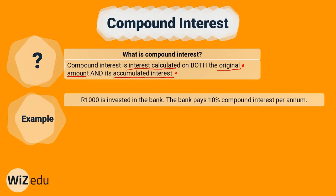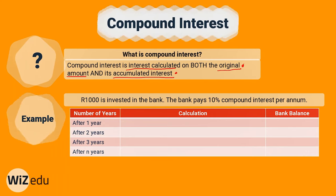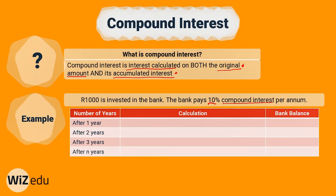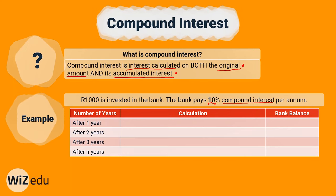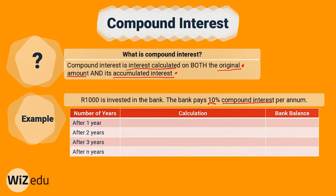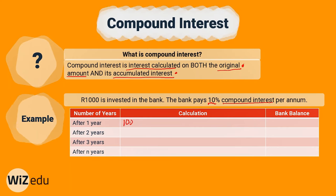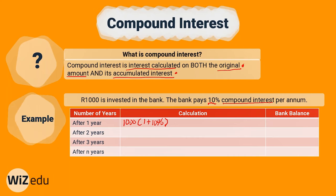In simple interest, we were only calculating interest on the original amount we put in, whereas with compound interest, we calculate interest on this original amount, but we also calculate interest on the accumulated interest added over the years. Let's take the same 1000 rand we invested in our previous simple interest example, at the same interest rate of 10%, but this time the interest is compounded per annum. So for our first year, the calculation is going to be 1000 into one plus 10% times one.